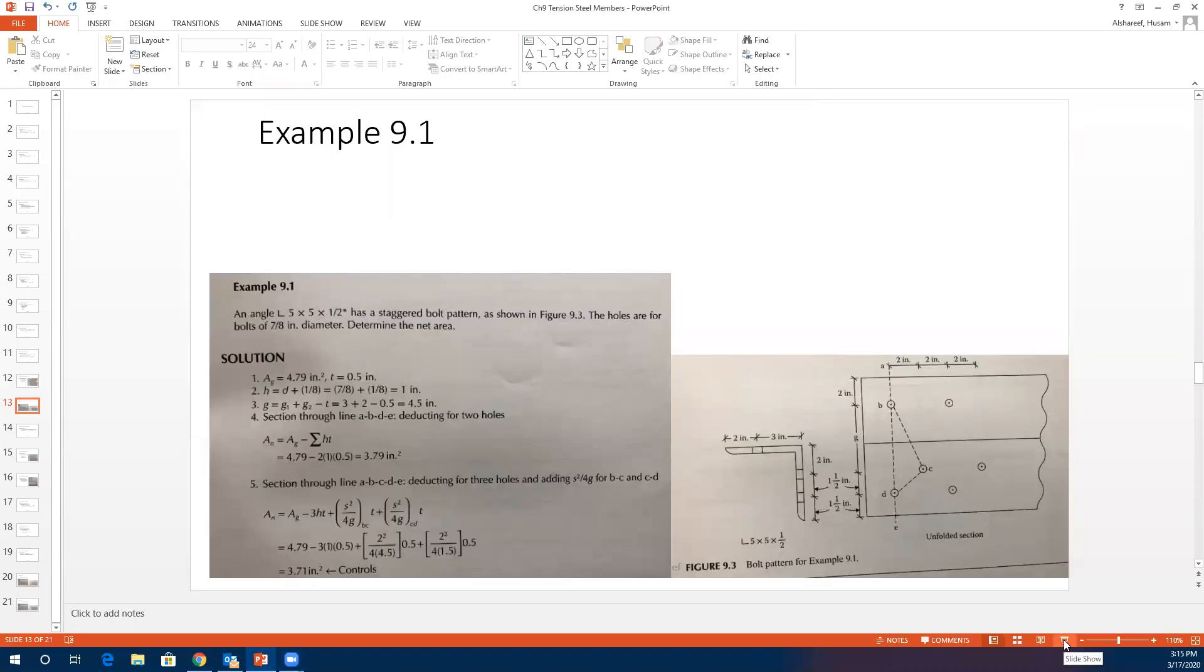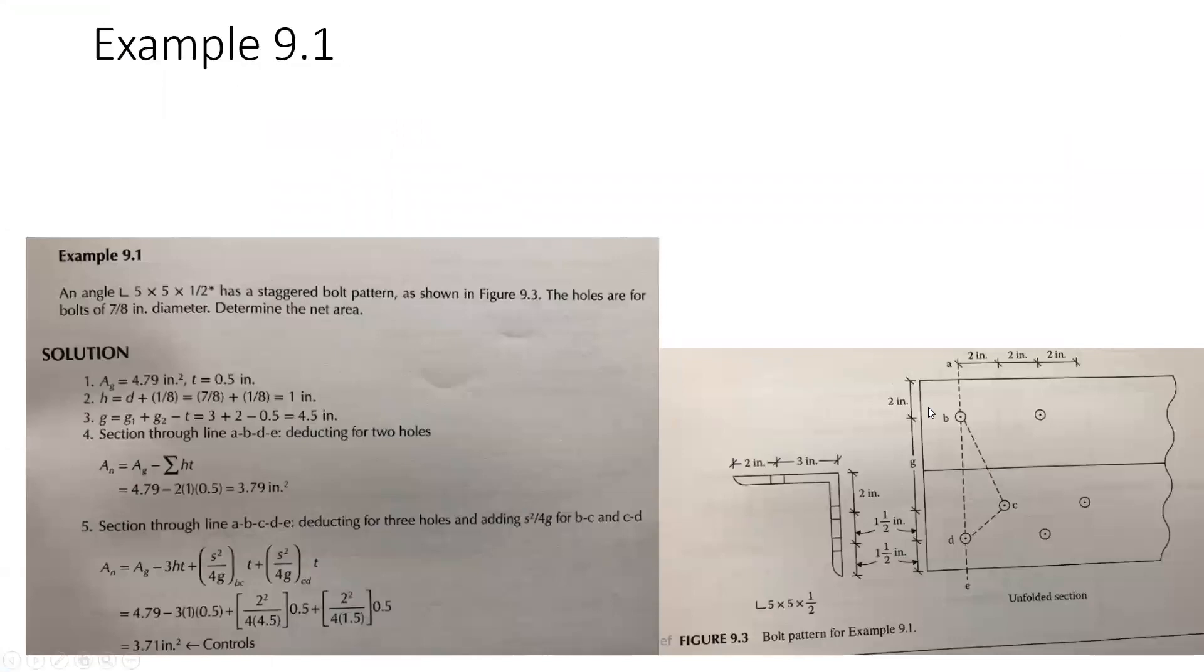All right, this is part two, tension and steel. So we stopped at Example 9.1. To continue and to recap all the information that we've covered in chapter one, I think this example will be a good review for that.